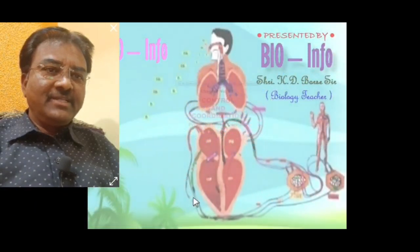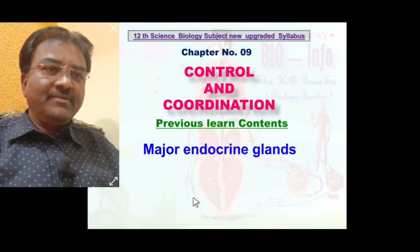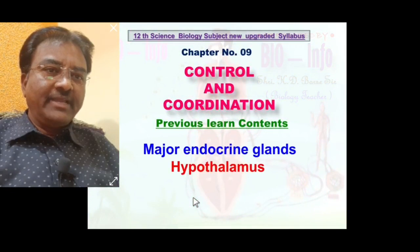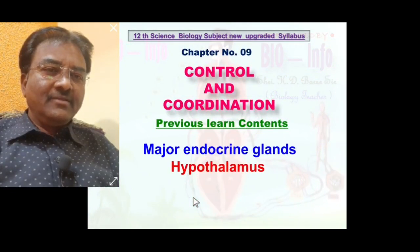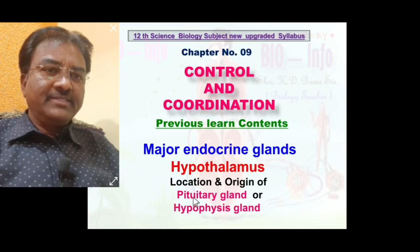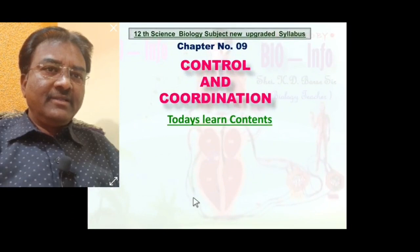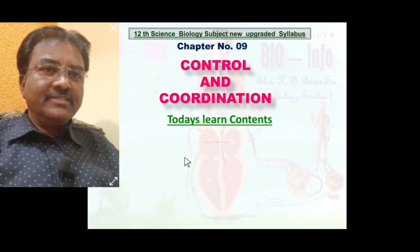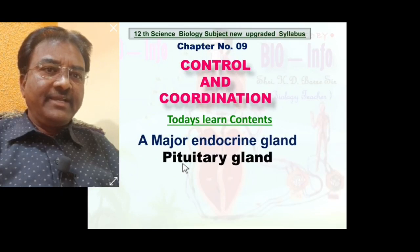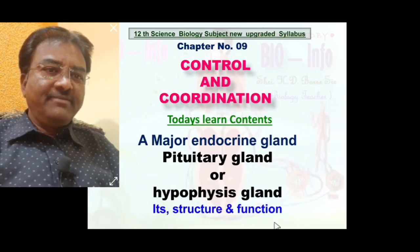In the previous lecture, we learned control and coordination chapter content concept, major endocrine glands, hypothalamus. We also learned the location and origin of pituitary gland, also called as hypophysis gland. Today, we are going to learn about the pituitary gland, also called as hypophysis gland — its structure and function.